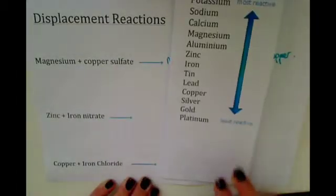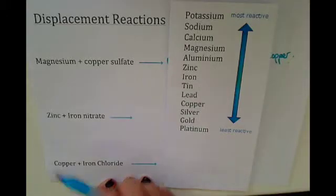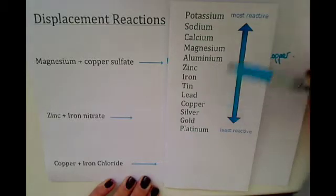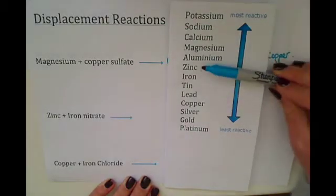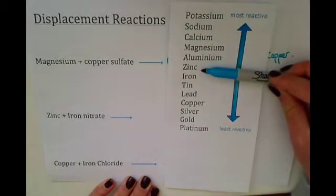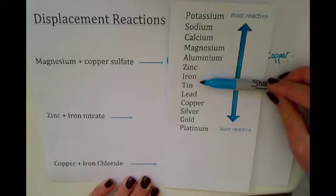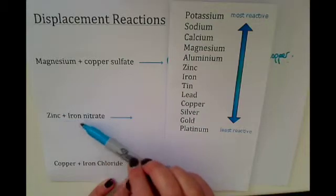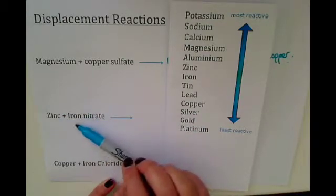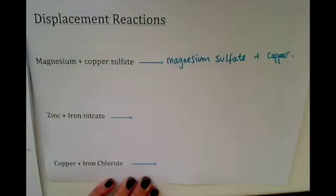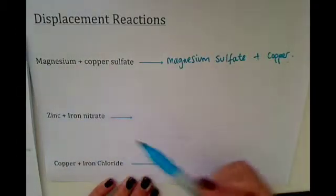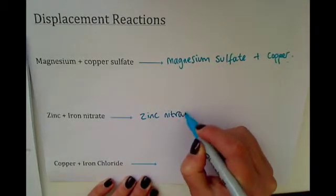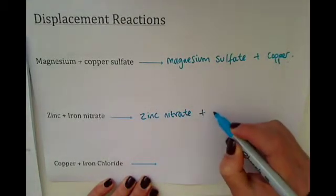For our second example, we have got zinc plus iron nitrate. So we look at our reactivity series. Zinc is higher on the reactivity series than iron, so this reaction will work. Zinc will come in and displace or kick out the iron, and we will be left with zinc nitrate plus iron — just swapping the words around.